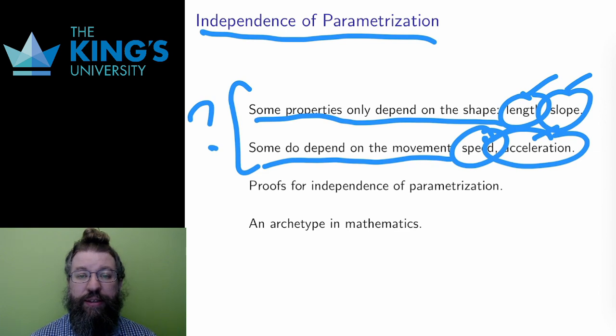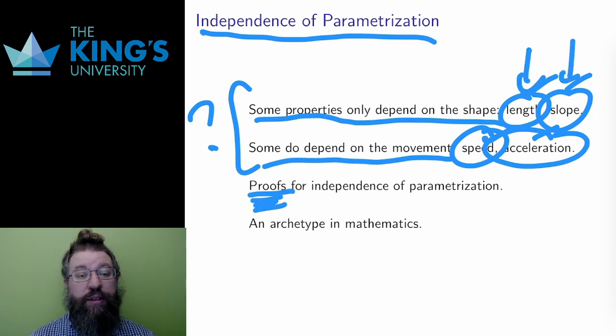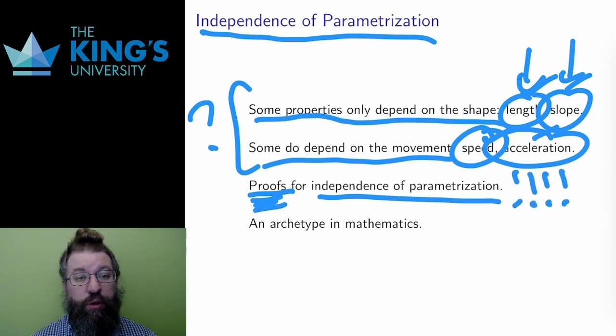I'm not going to get into the details here, but a lot of energy is consumed in mathematics to prove that the intrinsic properties shape, length, slope, are indeed independent of the parametrization. These proofs are important. I need to know that, regardless of the parametrization, the length calculation is reliable. I could prove that this definition of length that I've given is indeed independent of the parametrization. I'm not going to do it here, but consult the notes if you want to see this proof.